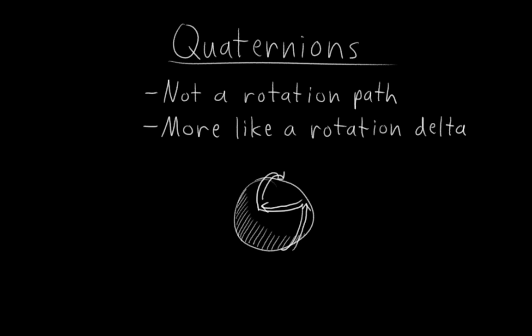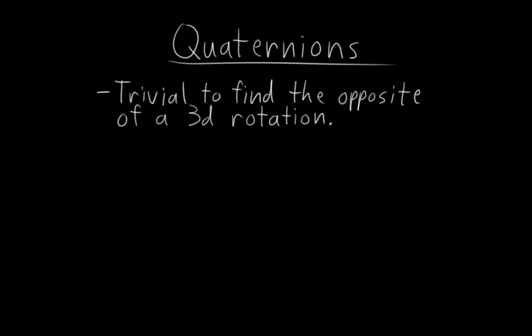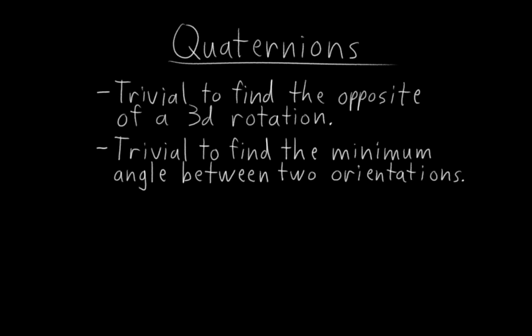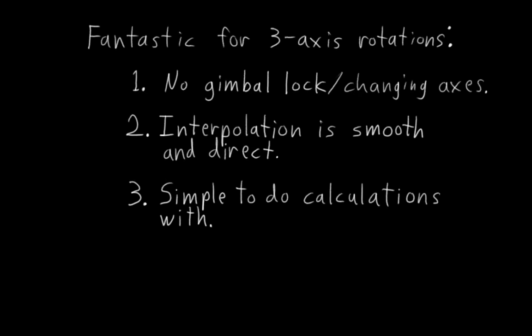Quaternions represent 3D rotations not as a rotation path like Eulers do with a sequence of rotations, but instead represent them more like a rotation delta. And that gives them very stable, consistent interpolation properties, because they're not backtracking through some arbitrary rotation path that has nothing to do with what the animator is animating, which is precisely what happens with Eulers. Due to the way quaternions represent rotations, it's also trivial to find the opposite of a 3D rotation, which we'll be using to rig the 3D ball, and to find the minimum angle or distance between two orientations. Both of these are useful to be able to do in rigging. So there we have it. Those are pretty much the advantages of quaternion rotations.